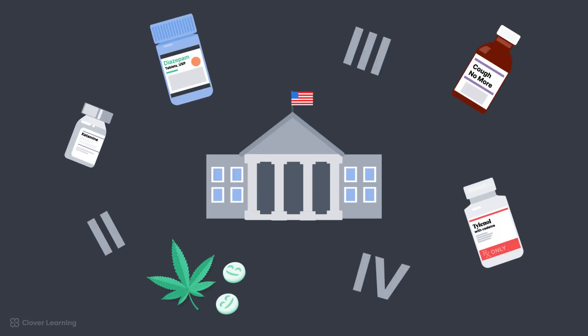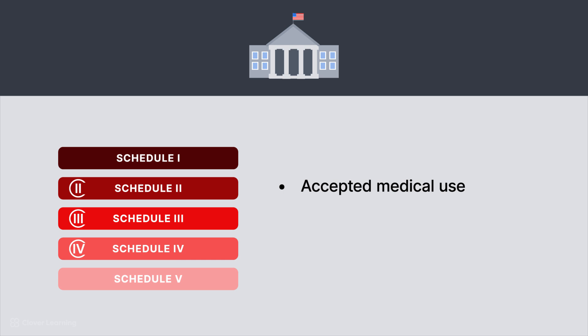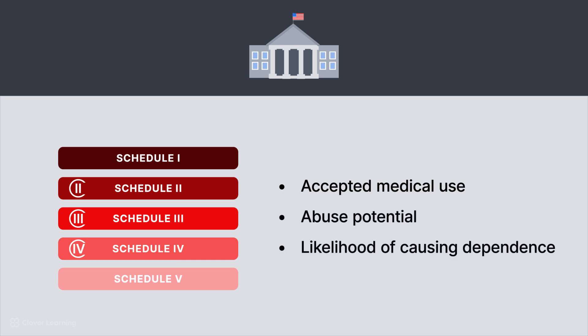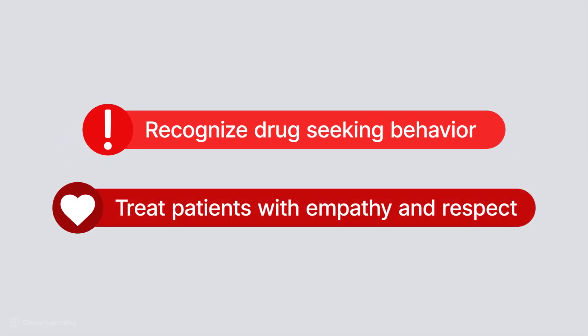In summary, controlled substances are drugs regulated by law due to their potential for abuse and dependence. They are classified into five schedules based on accepted medical use, abuse potential, and likelihood of causing dependence. The handling of controlled substances is governed by strict legal and professional requirements. It is important to familiarize yourself with both the law and your facility's policies, recognize drug-seeking behavior, and handle patients in need of controlled substances with empathy and respect.